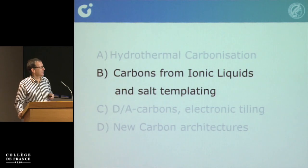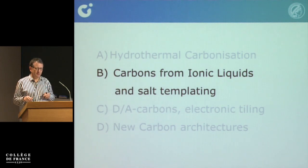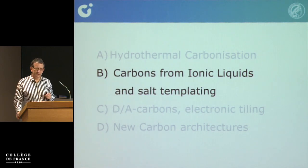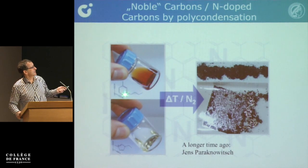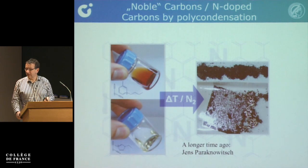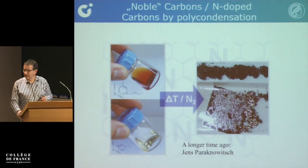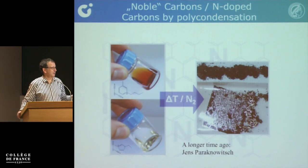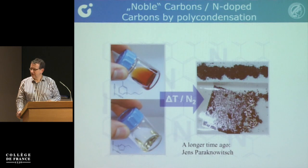Let's move on to carbons from ionic liquids and salt templating, because this allows me to elaborate on Fermi level variations — we varied the Fermi level by doping techniques and alternations of electronic structures in comparison with functional groups. This is how ionic liquids look. The reason we took them is the nice chemistry for cross-linking: it's like a monomer, but it doesn't run away, has no volatility, no boiling point, so this molecule has to wait until it's condensed and carbonized.